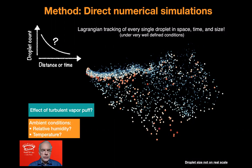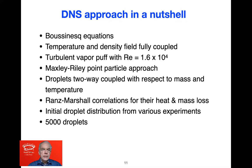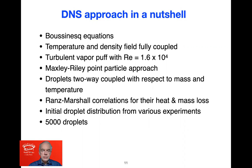We want to study the effect of the turbulent vapor puff and the effect of ambient conditions, namely relative humidity and temperature. In the DNS approach, in a nutshell, we use the Boussinesq equation with fully coupled temperature and density fields. The turbulent vapor puff has a Reynolds number of about 10 to the 4. We use the Maxey-Riley point particle approach, with droplets two-way coupled for mass and temperature via the Ranz-Marshall correlation. The initial droplet size distribution is from various experiments, starting with 5,000 droplets.